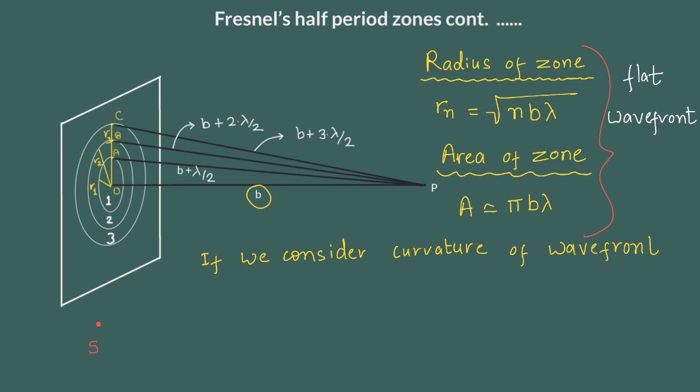But in this case we have to consider. So let us consider a source s and observation point p. Again pole is o. Distance between source and the pole is a and the distance between pole and the point is b, similar to the first one.